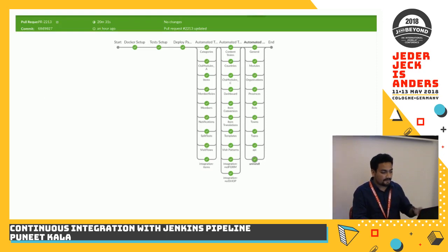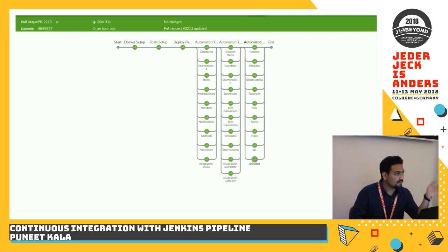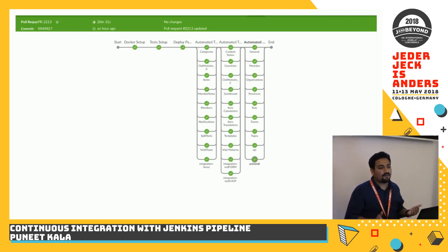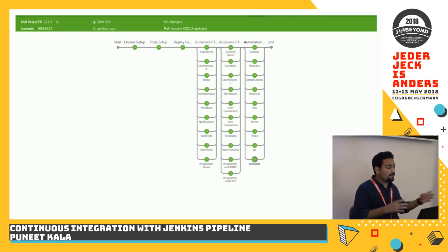As you can see in this image, these are the tests we are running on Jenkins pipeline at the moment. The Docker setup is for fetching the Docker image. The test setup is for installing Joomla CMS and the extension with the new code from the pull request. We deploy the package to our test server, and then we have many stages running in parallel — all of them take around 10 to 15 minutes. This kind of architecture is not achievable in Travis or other third-party systems; even Drone doesn't support it. In terms of scalability and continuous integration and delivery, you get a very good option with Jenkins.